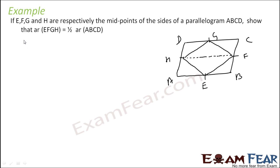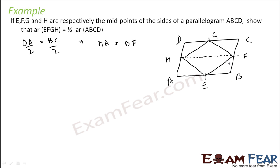Now you see, DA equals BC since they are sides of the parallelogram. So DA divided by 2 equals BC divided by 2. What is DA by 2? That is HA. What is BC by 2? That is BF. So HA equals BF. Now HA equals BF and HA is also parallel to BF. So we can say that HABF is a parallelogram.